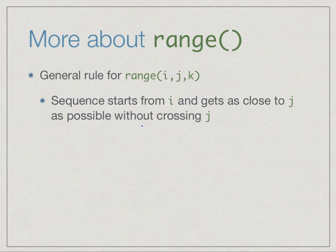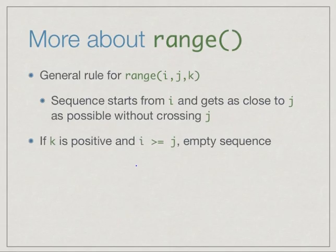The general rule for the range function is that you start with i and you increment or decrement if k is negative in steps of k such that you keep going as far as possible without crossing j. In particular, what this means is that if you are going forwards, if your increment is positive, then if you start with the value which is too large, then you will generate the empty sequence because you cannot even generate i because if i itself is bigger than or equal to j, then that would not be allowed.